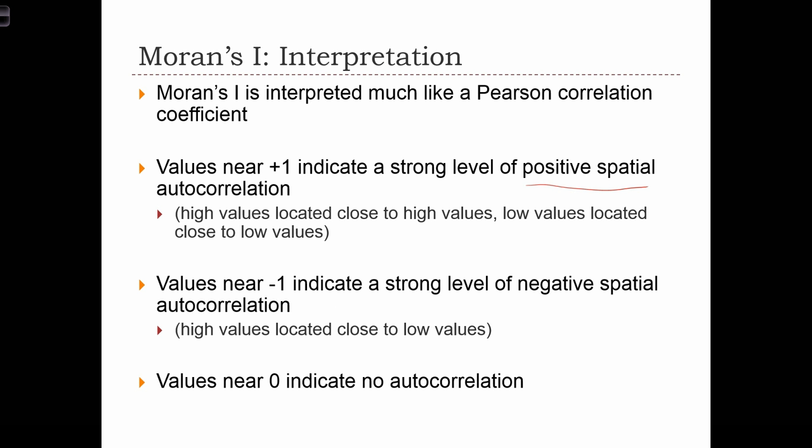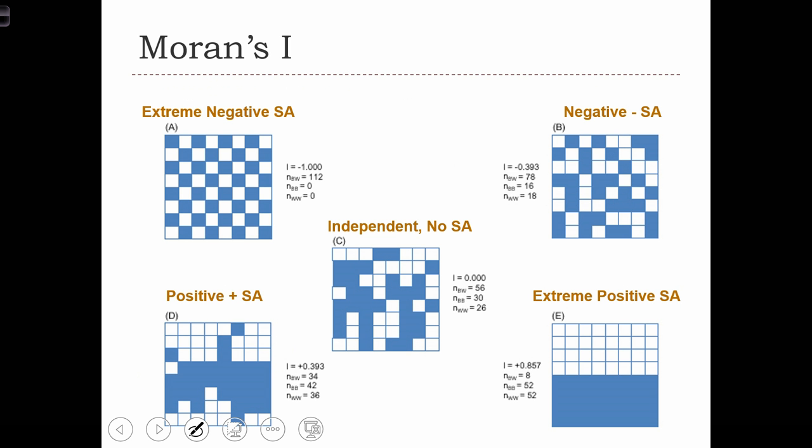When Moran's I is close to zero, that's going to indicate that there's no autocorrelation. So we don't have clustering, we don't have uniformity. Instead, what we have is just a random pattern of data values on the map. There's no significant level of spatial pattern or spatial structure in the map when Moran's I equals zero.